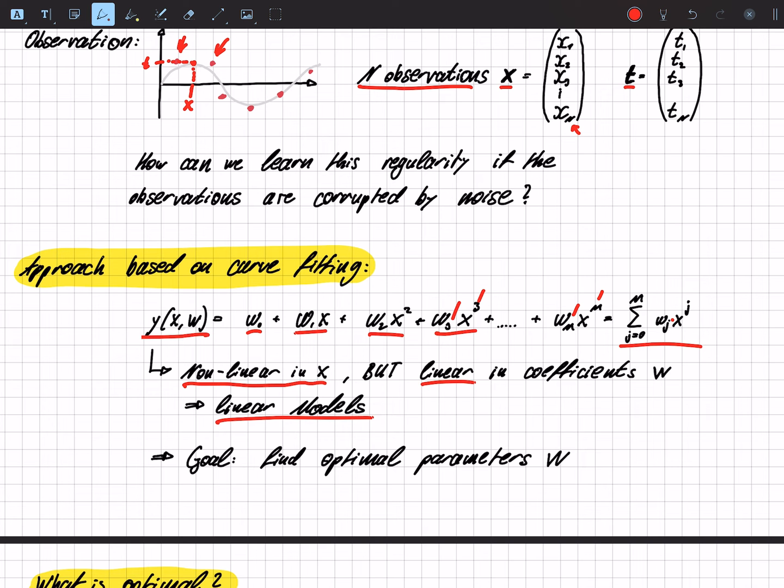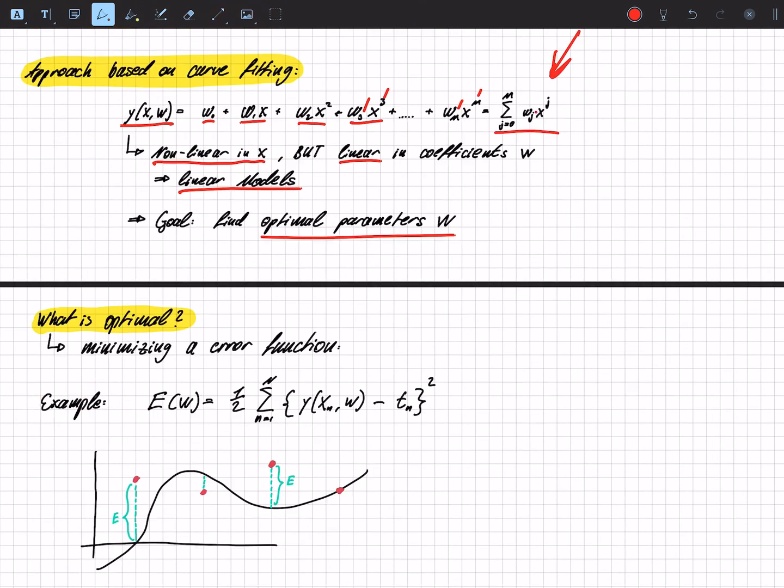Because the terms that we can change are linear. So if we derive them once, they disappear. And our goal is to find the optimal parameters w. So this is our function. And now we can choose the degree of the polynomial. And then we have to adapt our w's.